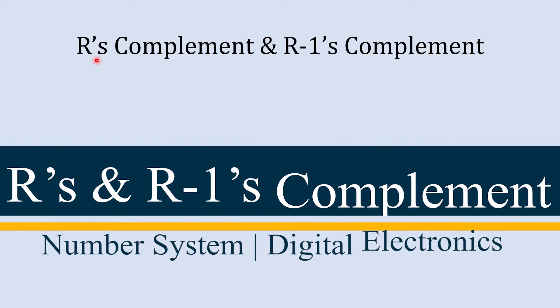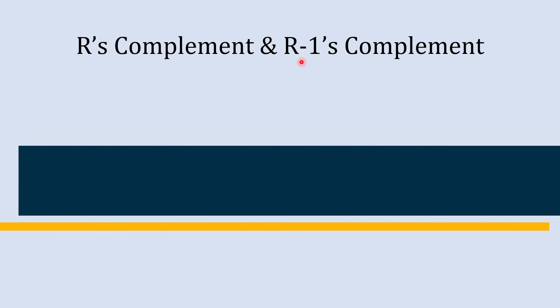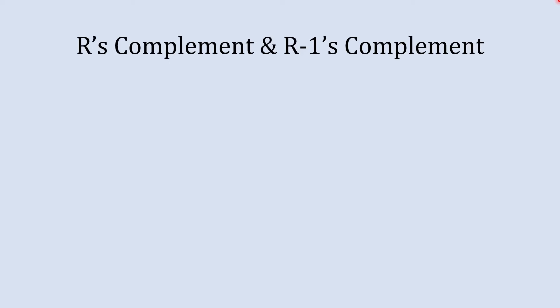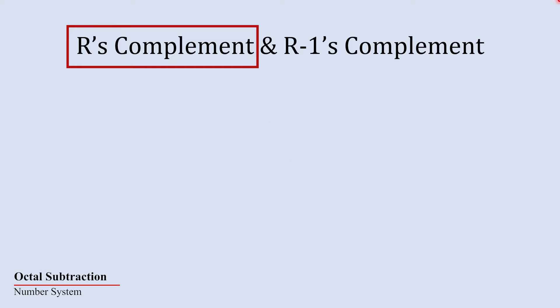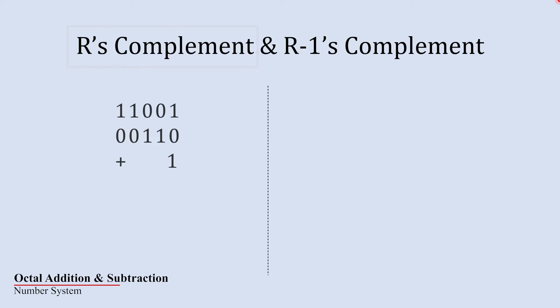Here we are going to explore r and r-1's complement. First of all, let's see what they are. R's complement is used to represent negative integers. It is achieved by flipping all the bits in a number and then adding 1 to the least significant bit.